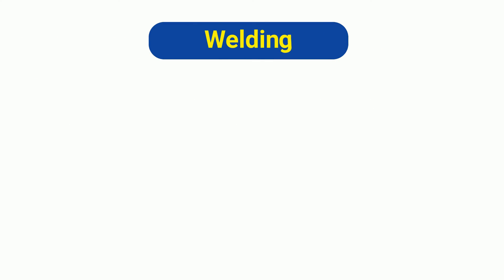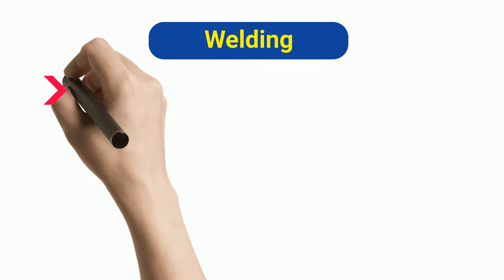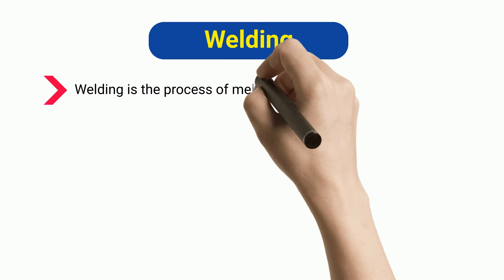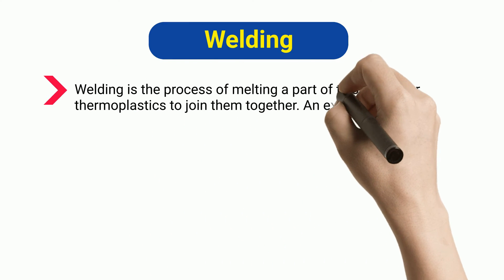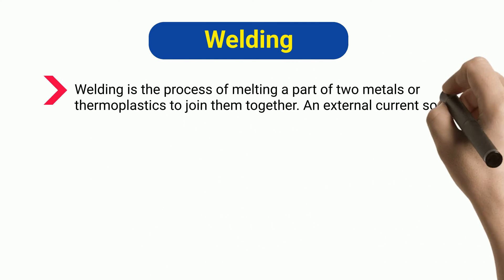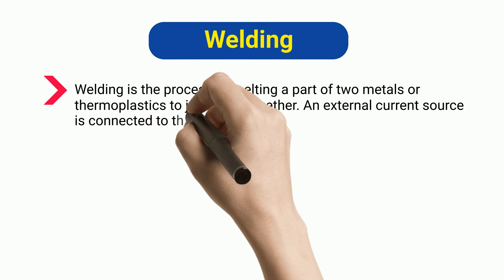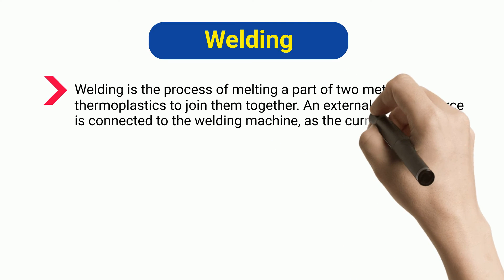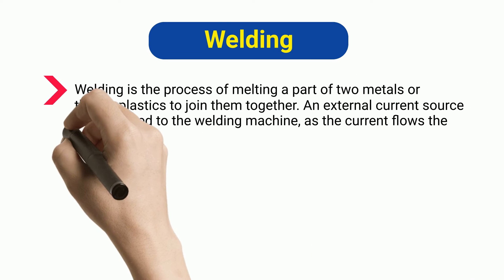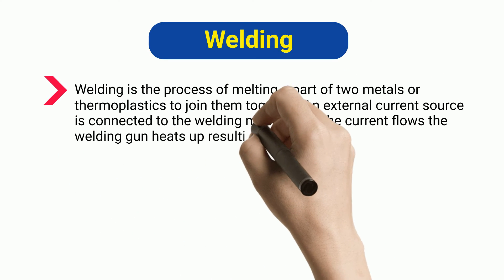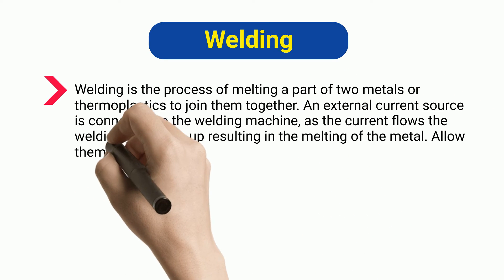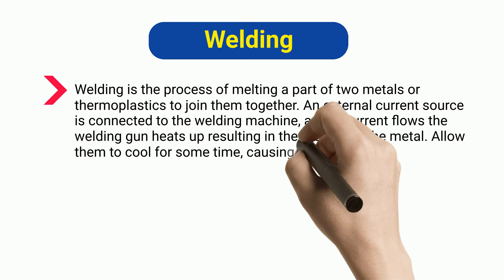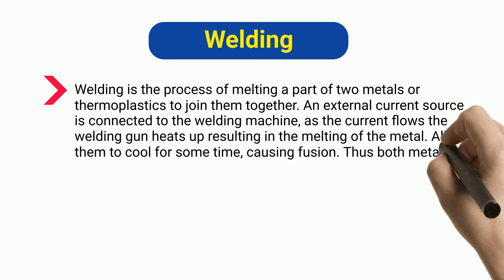Welding. Welding is the process of melting a part of two metals or thermoplastics to join them together. An external current source is connected to the welding machine; as the current flows, the welding gun heats up resulting in the melting of the metal.